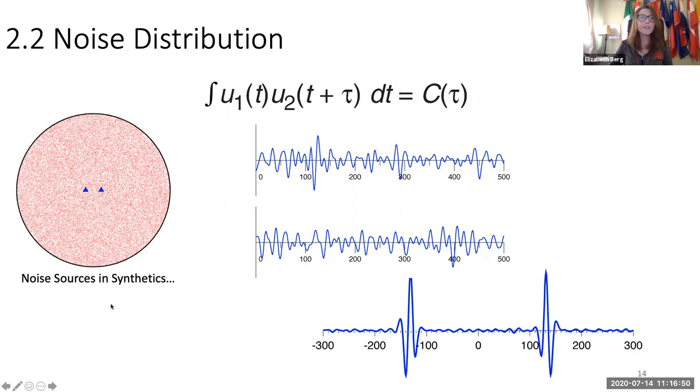Here is an example of a synthetic. If we have noise sources everywhere, and we get waveforms from those noise sources, and we cross correlate them, then we can obtain a very beautiful empirical greens function, or excuse me, a very beautiful cross correlation, which is related to the empirical greens function. This is really beautiful and really exciting.